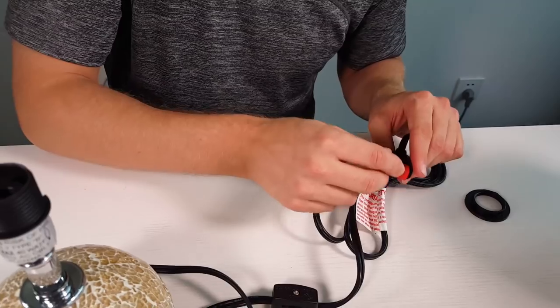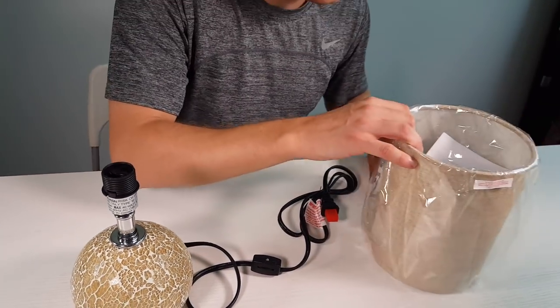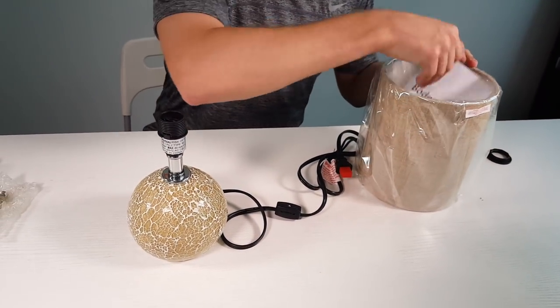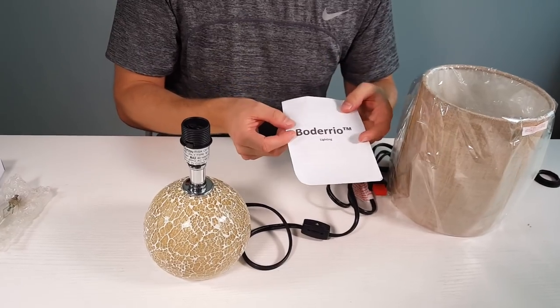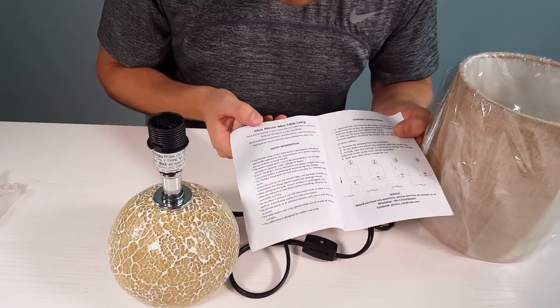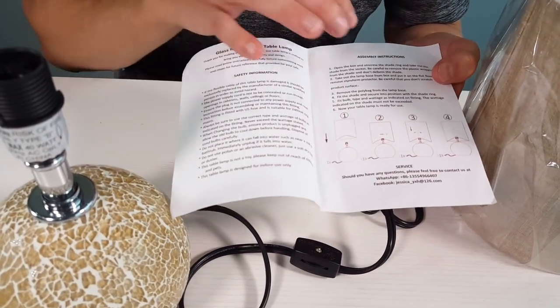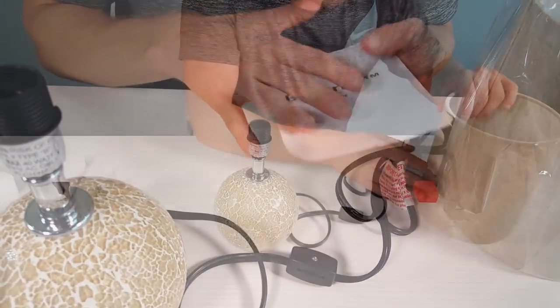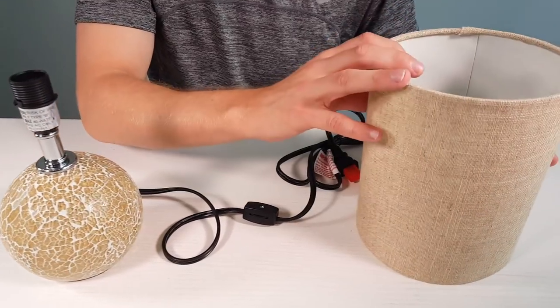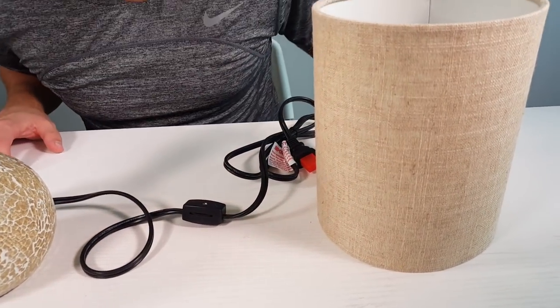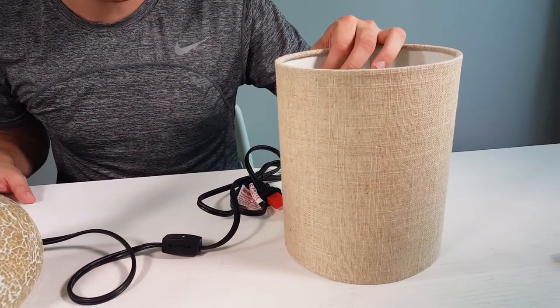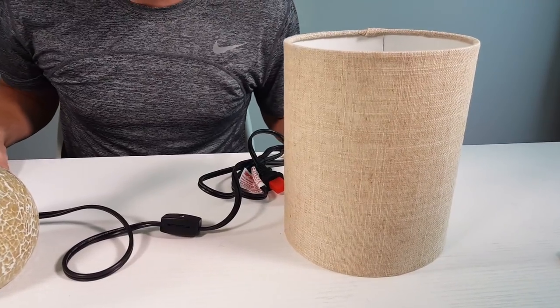Next we're moving on to the shade. As you can see here, there's a nice user manual that tells you exactly what the lamp features do, the safety information, and assembly instructions. It's really high quality - you can feel it's nice and thick. It's not going to deteriorate on you.